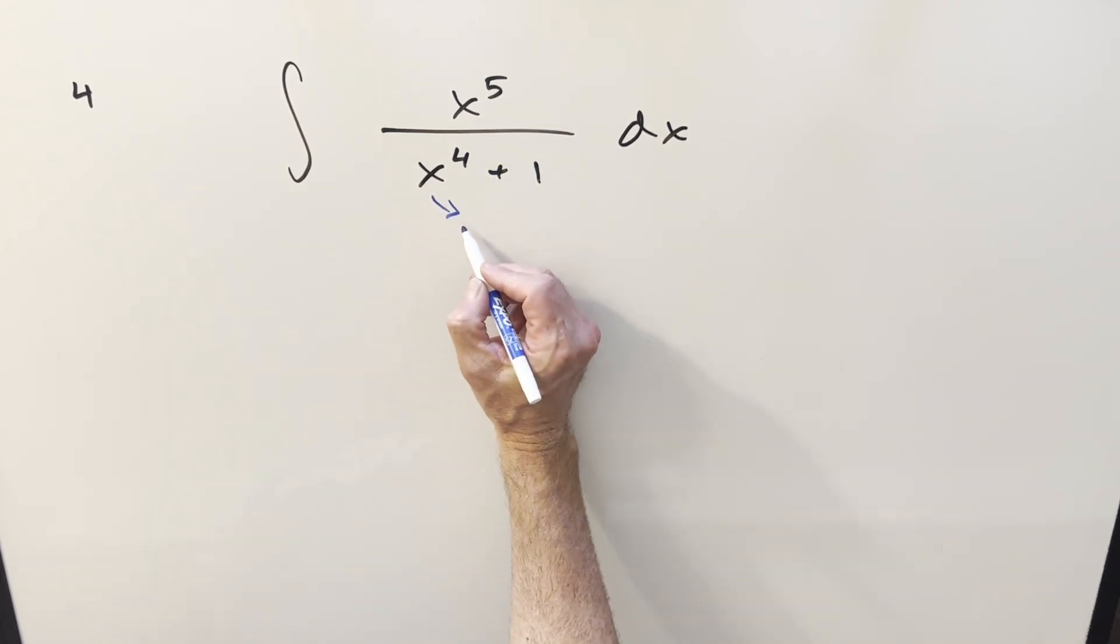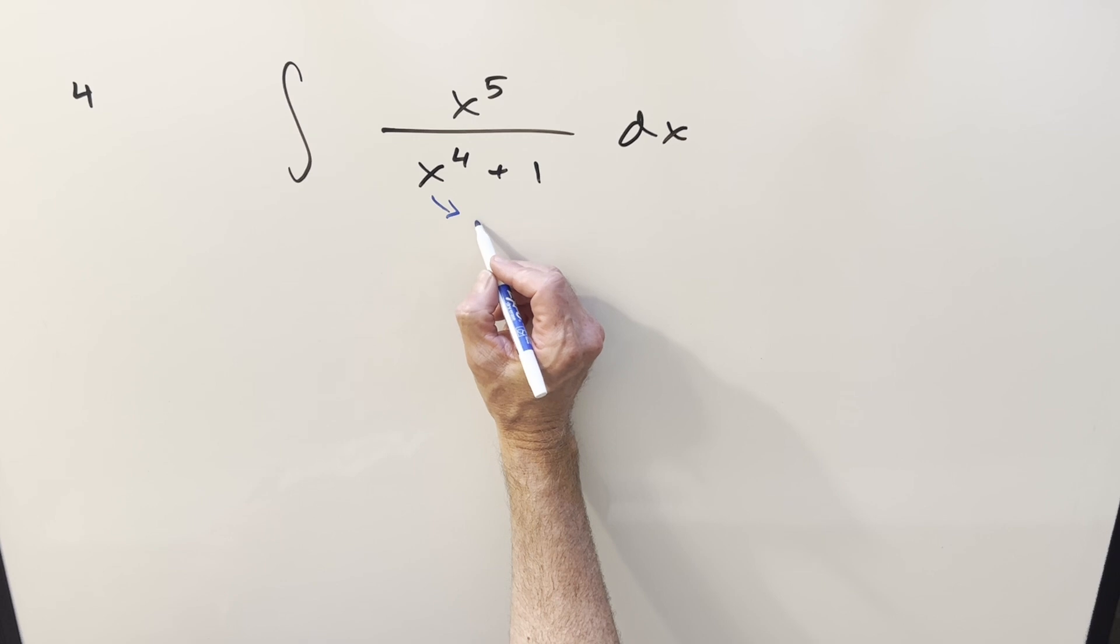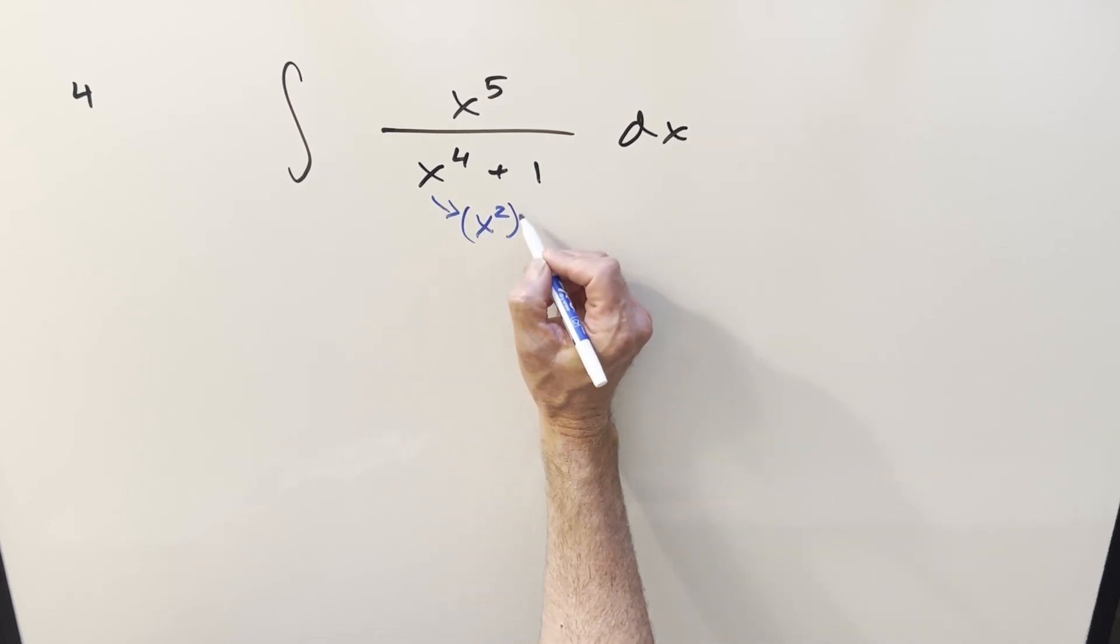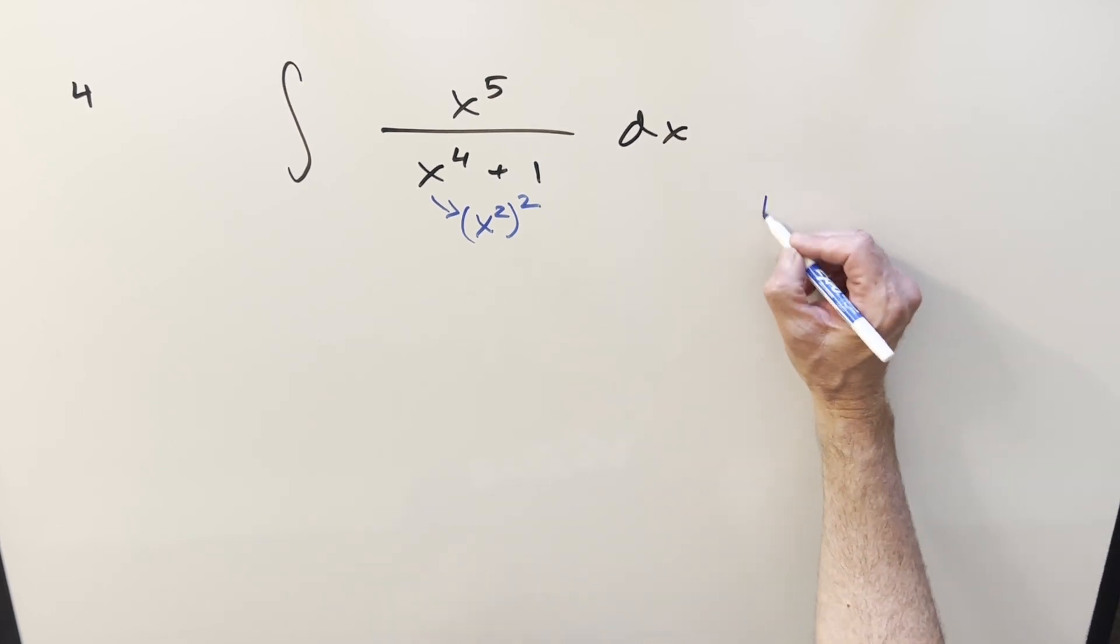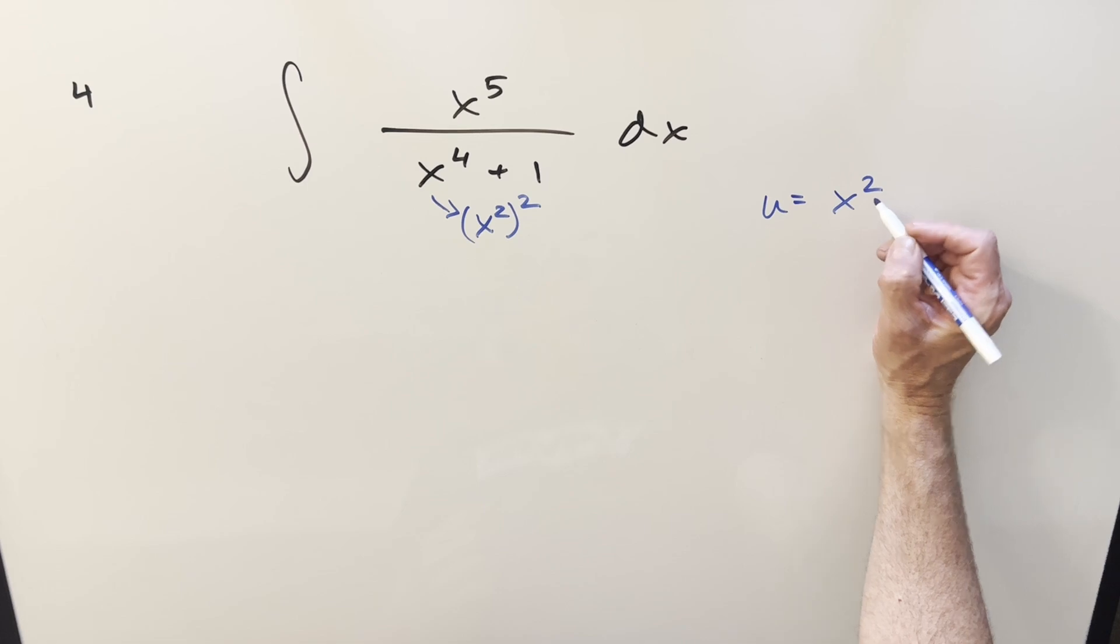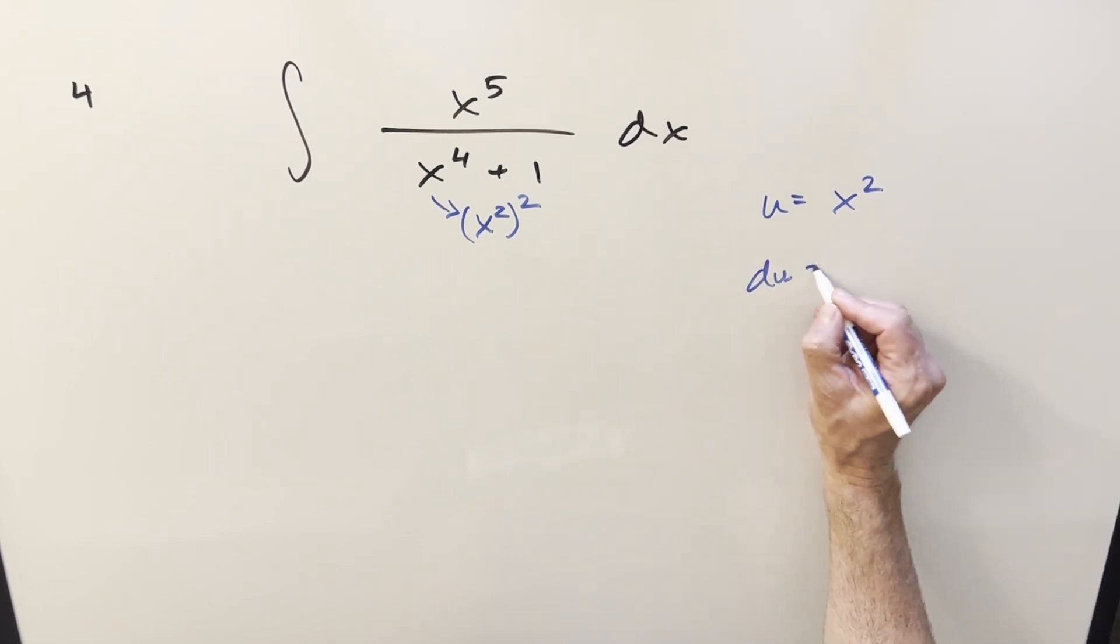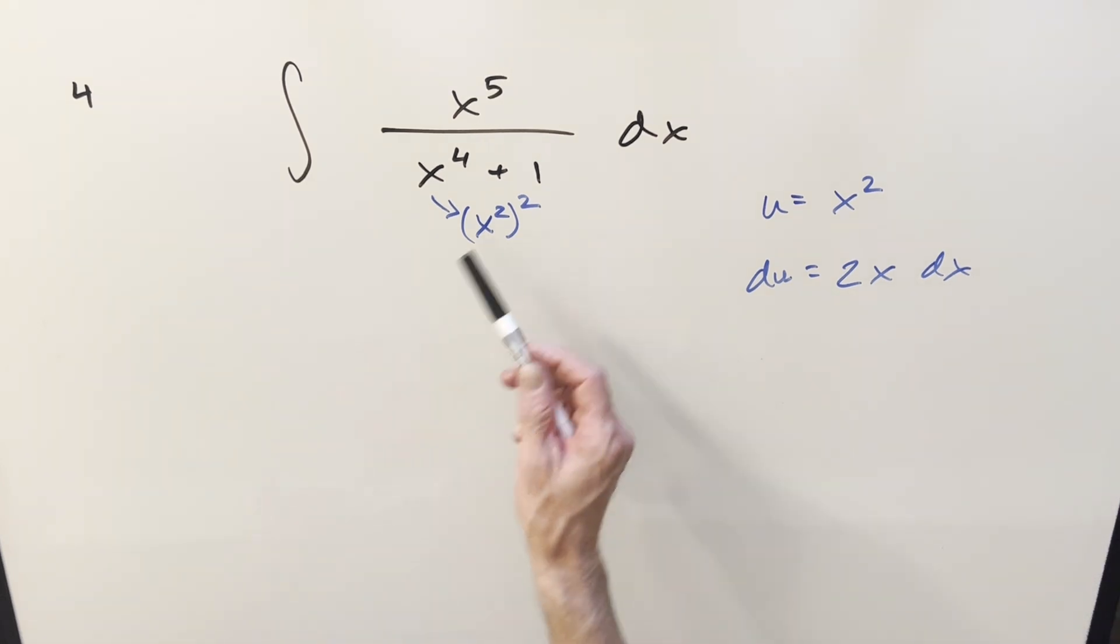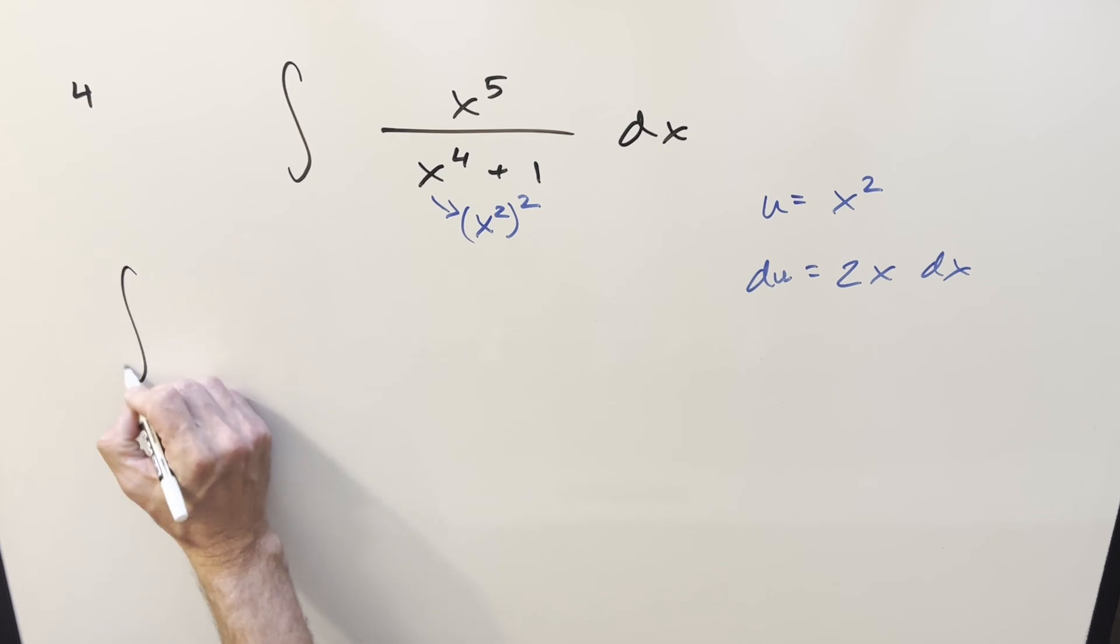What I wanted to do instead is, let's use x squared. So if we write this x to the 4th as x squared squared, then that'll set up a u-substitution where we could substitute u equal to x squared. Then our du value is going to be 2x dx. And so now the only question is, can we rewrite the integral so this is going to be convenient?